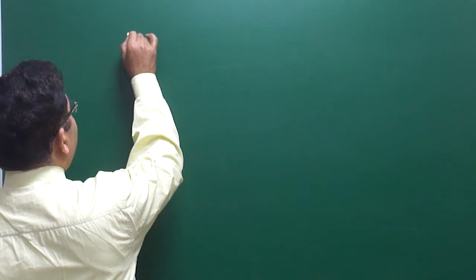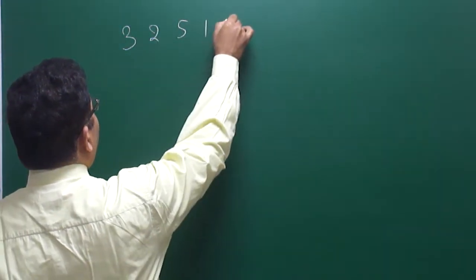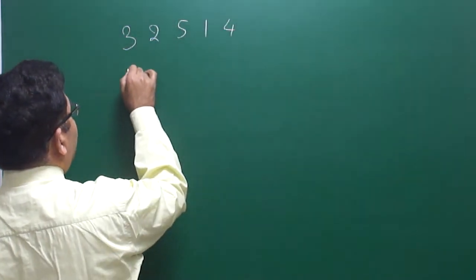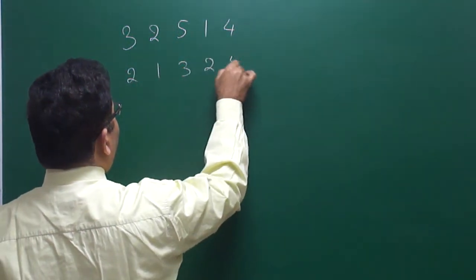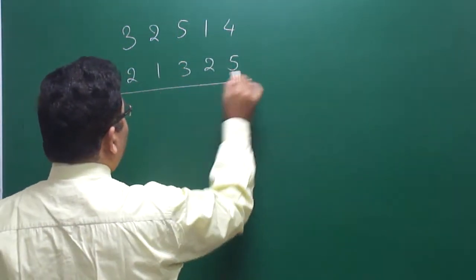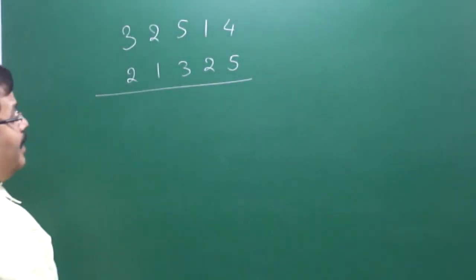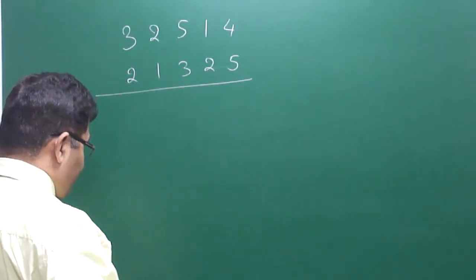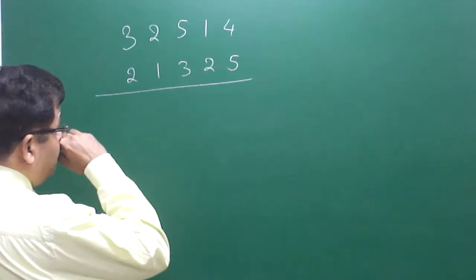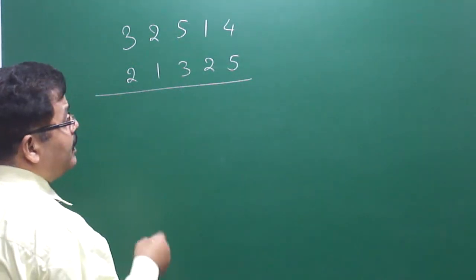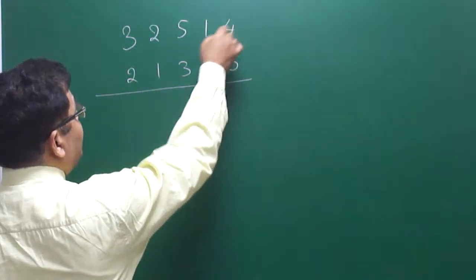Suppose I have taken 32514 multiplied by 21325. This is what we want to do — multiply together. After learning this technique, you will be able to solve this in no more than seven seconds. That is what I promise.